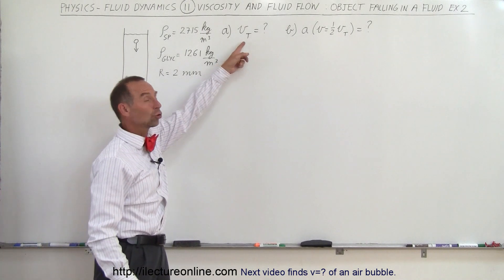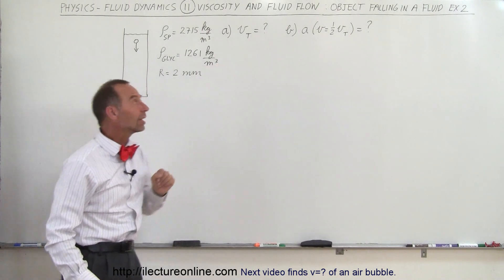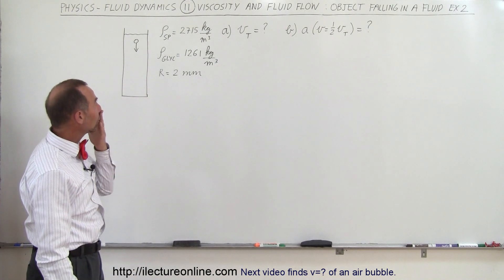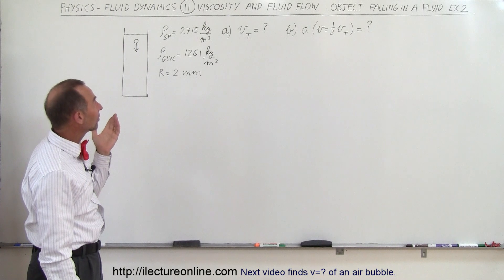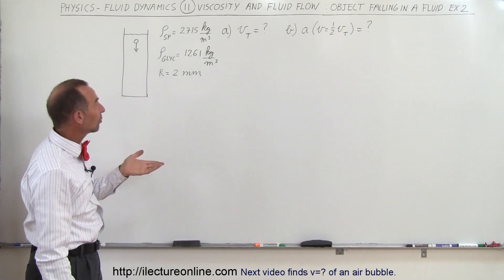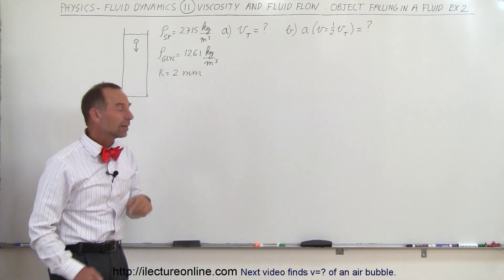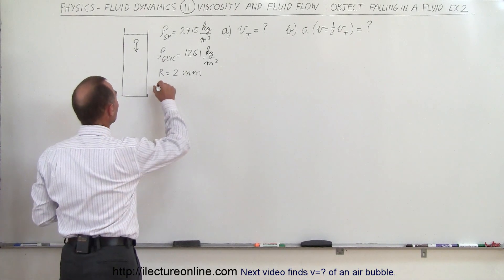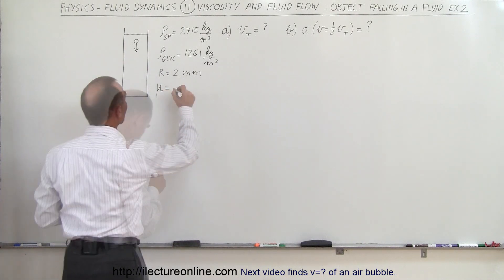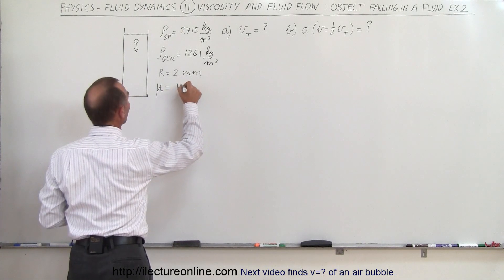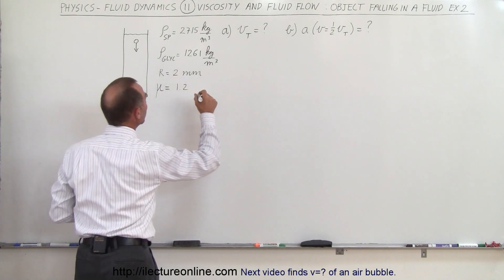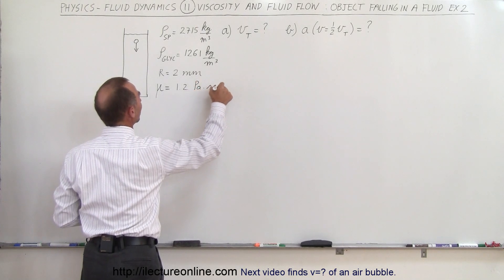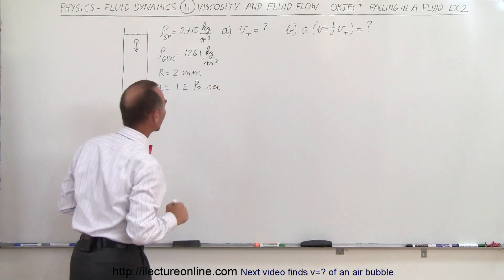We're trying to find the terminal velocity, and in order to find the terminal velocity we'll have to know the coefficient of viscosity. Mu equals 1.2 Pascal-seconds for the viscosity of the liquid.